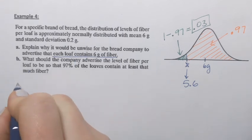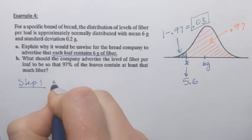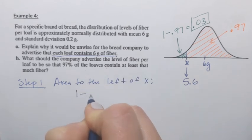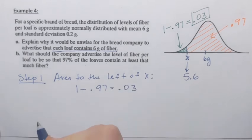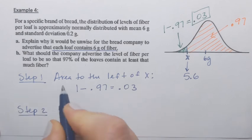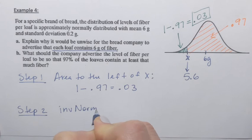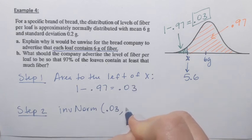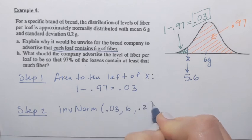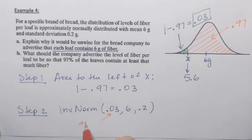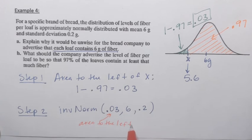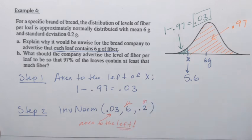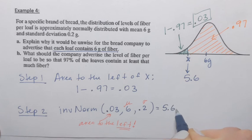Let's make a few notes. Step one was to find area to the left, area to the left of x. It's 1 minus 0.97, which is 0.03. And then we used, in the second step, we used invnorm function, where we entered 0.03 area to the left, 6 grams, that was the mean, and then 0.2, that was the standard deviation. Area to the left, mean, and the standard deviation.